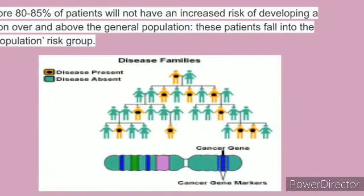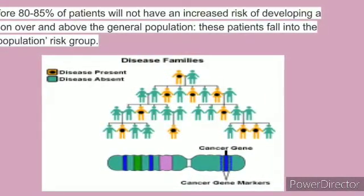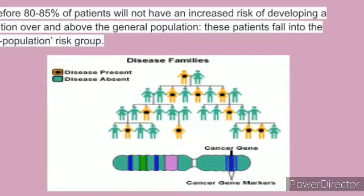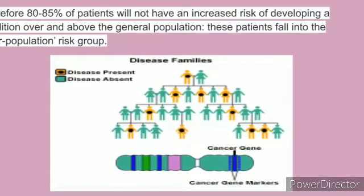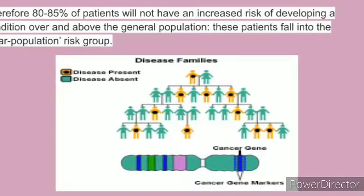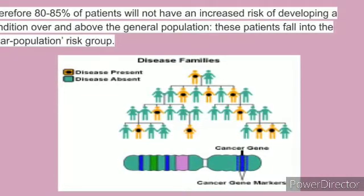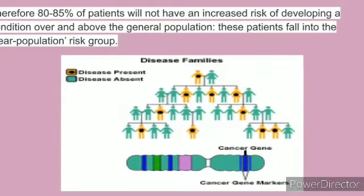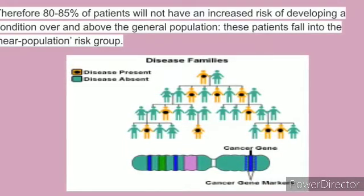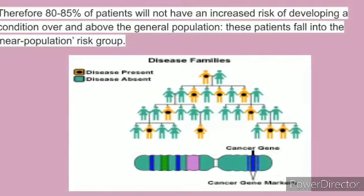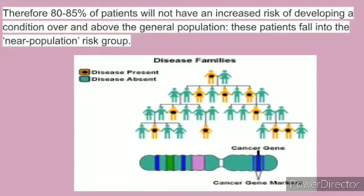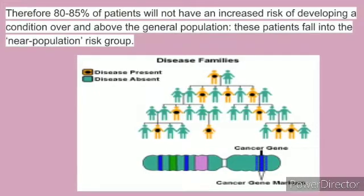A further 10–50% of all diagnoses of multifactorial conditions are likely to have a mixed etiology. These patients have been recognized to have an increased risk through epidemiological studies of families with relevant family histories. It is now known that this increased risk results from the effect of multiple genes, each individually contributing a small increase in risk and their interaction with environmental factors. This is now called polygenic risk. We can see that 80–85% of patients will not have an increased rate of developing a condition over and above the general population — this patient falls into the near-population risk group.